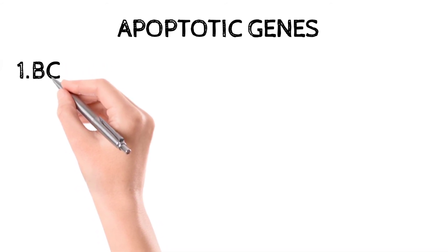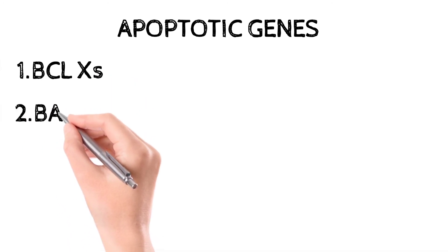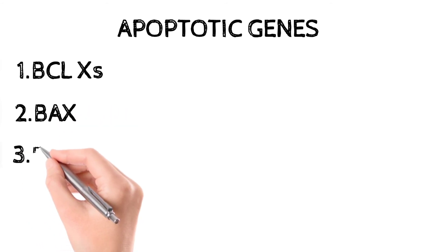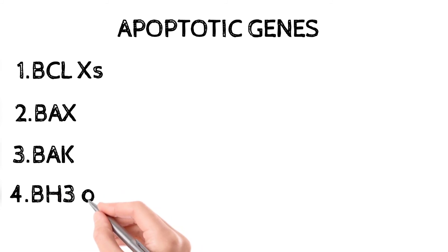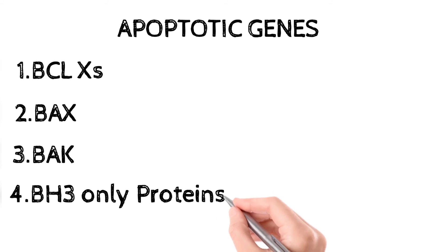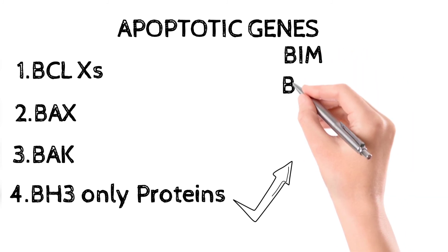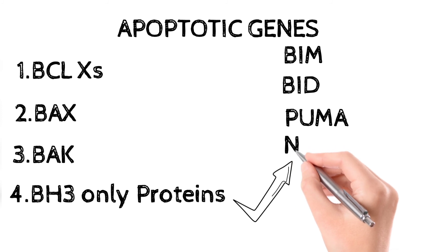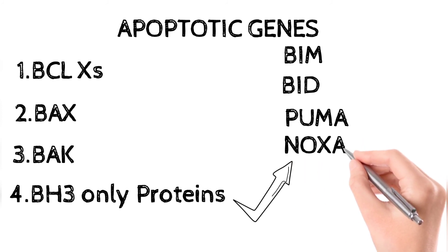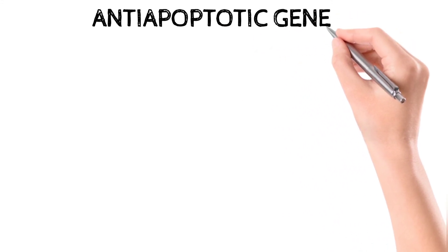The apoptotic genes — genes or proteins responsible for apoptosis — are: first, BCLXS; second, BAX; third, BAK (formally known as the BAX/BAK channel); and fourth, BH3-only proteins, also known as stress sensors. The specific BH3-only proteins are BIM, BID, PUMA, and NOXA — these four are the BH3-only stress sensor proteins involved in the intrinsic pathway.